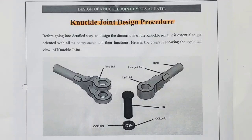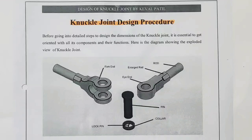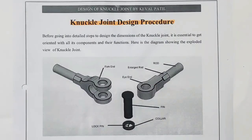What are the applications of the knuckle joint? It is used between the tie rods or tie bars of roof trusses, in the linkage of suspension bridges, in the mechanism of reciprocating engines, as a fulcrum for levers, in joints between links and bicycle chains, and also in the joint between the ends of a hand pump lever.